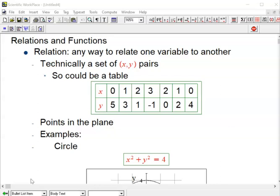A relation is just any way to relate one variable to another. Almost all the time these variables are going to be real numbers. Technically it's just a set, you can think of it as a list, sometimes a ginormous list of (x, y) pairs. So the simplest kind of thing you can imagine is just a table.